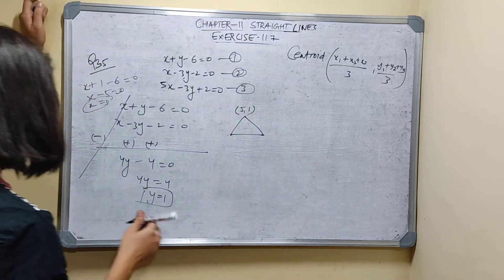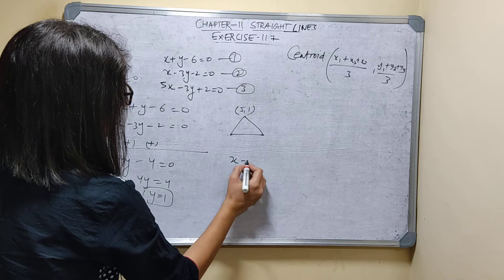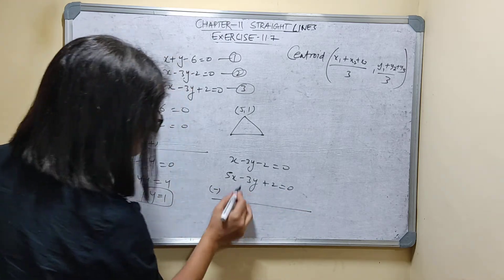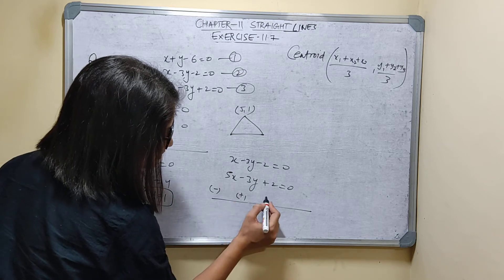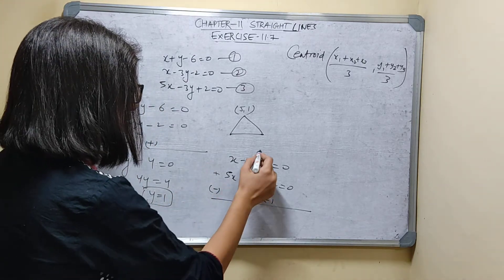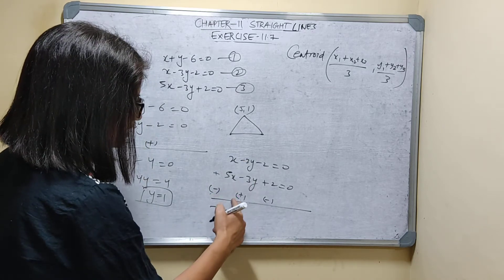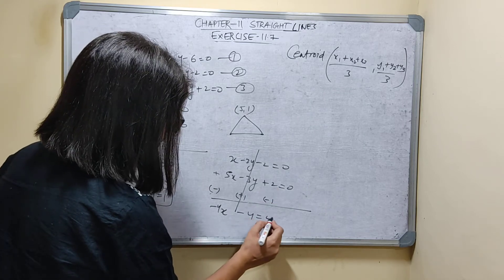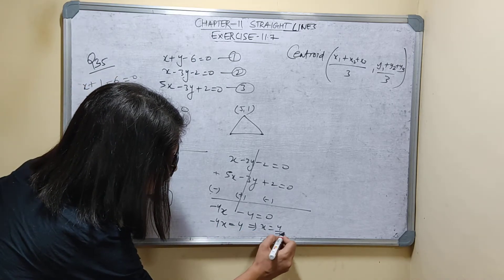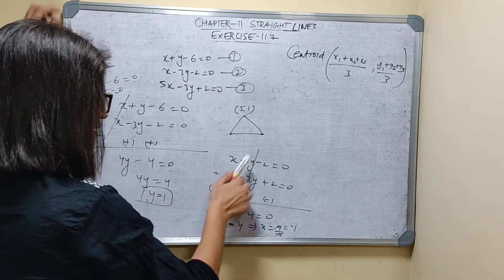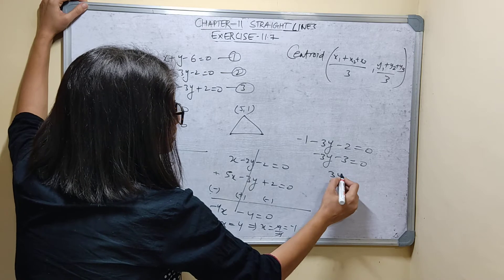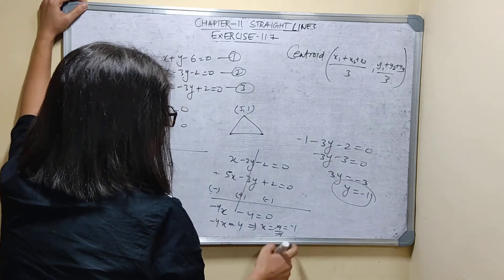Now finding the second point by solving equations 2 and 3: x minus 3y minus 2 equals 0, and 5x minus 3y plus 2 equals 0. Subtracting: x minus 5x gives minus 4x, minus 3y plus 3y cancels, minus 2 minus 2 gives minus 4 equals 0. So minus 4x equals 4, therefore x equals minus 1. Substituting back: minus 1 minus 3y minus 2 equals 0, so minus 3y equals 3, therefore y equals minus 1. The second point is (−1, −1).